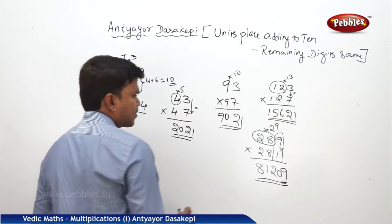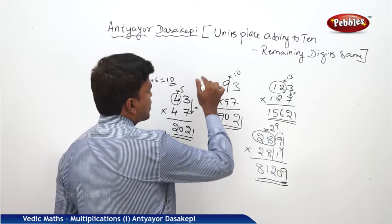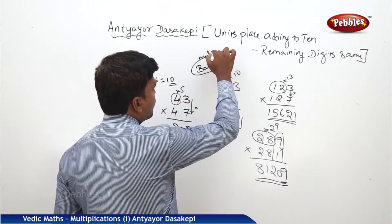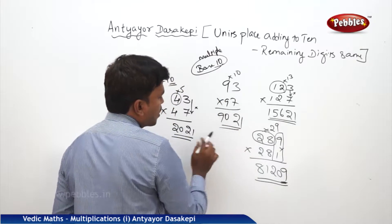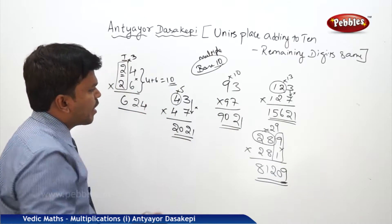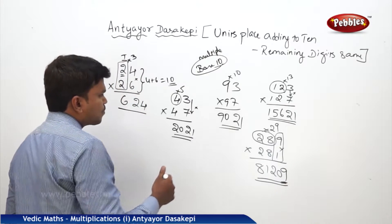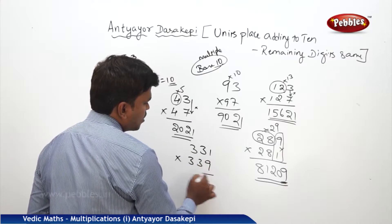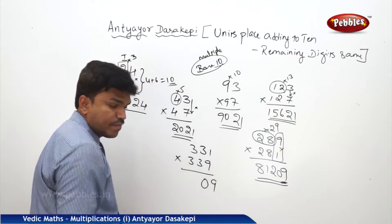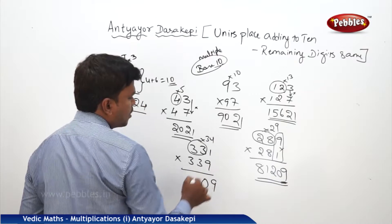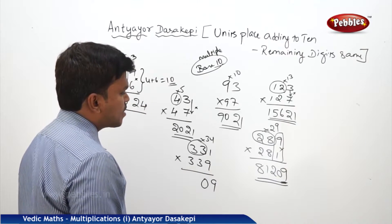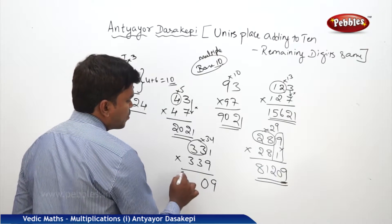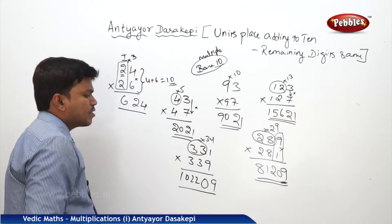Here we are taking the base as a multiple of 10, so the right side part, even if it is a single digit, you write it with a leading zero — no problem. What is 331 into 339? Units: 1 into 9 is 9, written as 09. Then 33 into 34: 33 squared is 1089, plus 33 is 1122. So your answer is 112209.